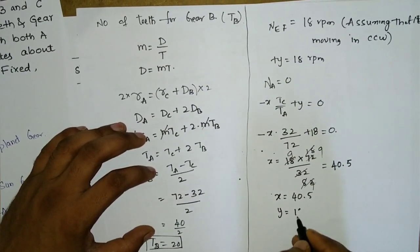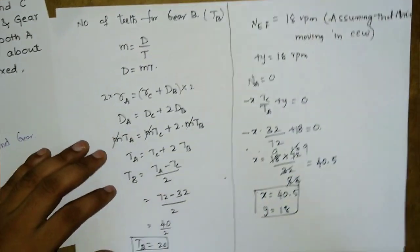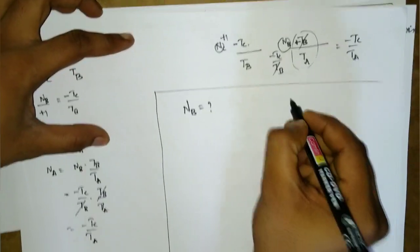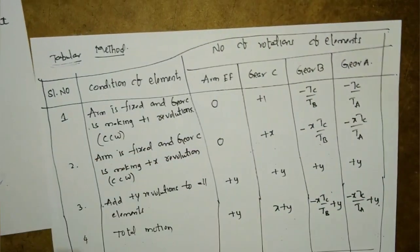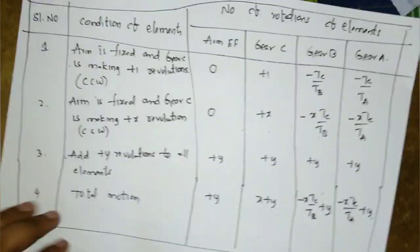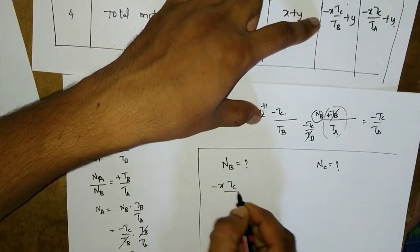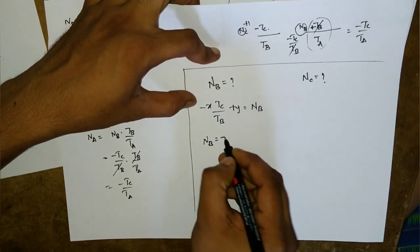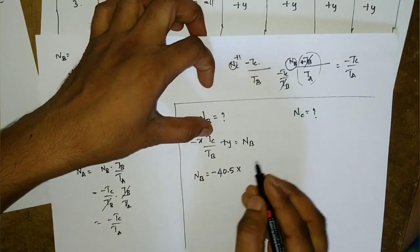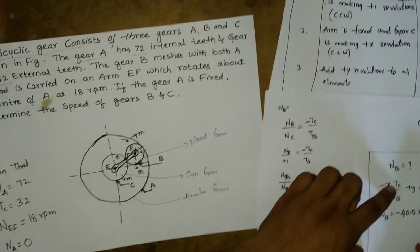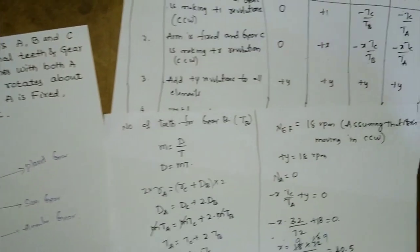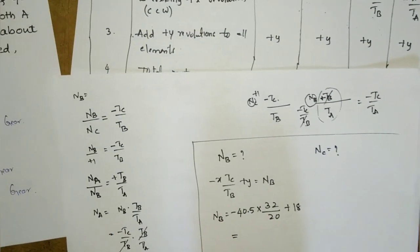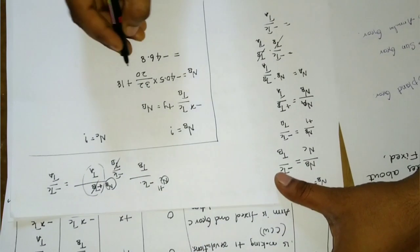Find the speed of gear B: NB = −X·(TC/TB) + Y = −40.5 × (32/20) + 18. Calculating: −40.5 × 1.6 + 18 = −64.8 + 18 = −46.8 RPM.